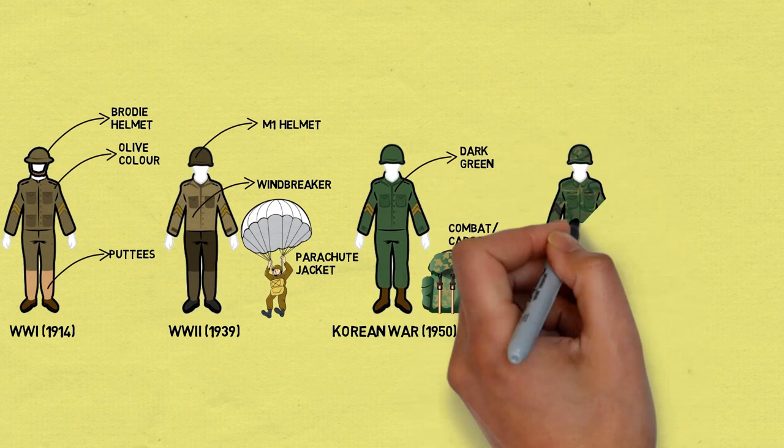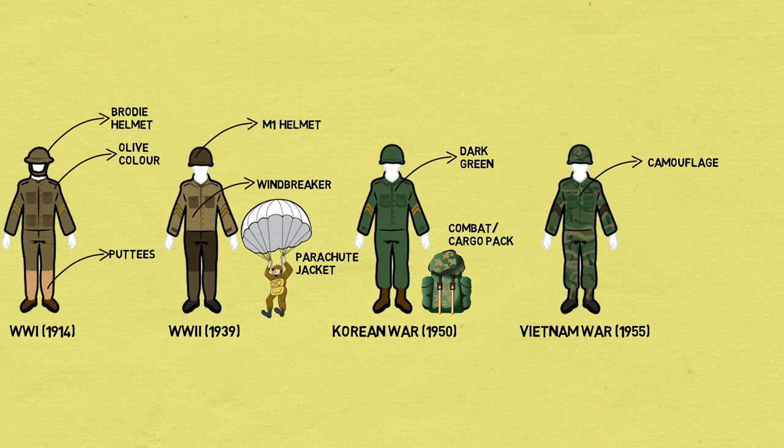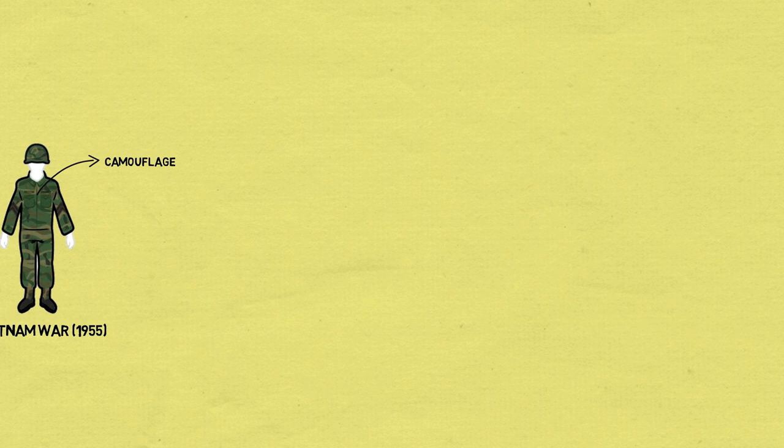Vietnam War 1955: The uniforms of the Korean and Vietnam Wars were similar. Although it did not change much, the Army did begin to roll out camouflage patterns for specialized units. The Army also decided to change the badge color to black.